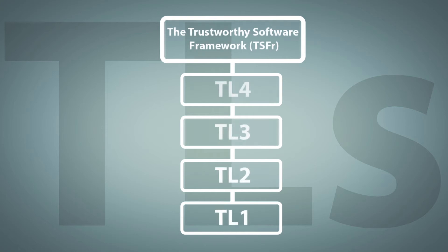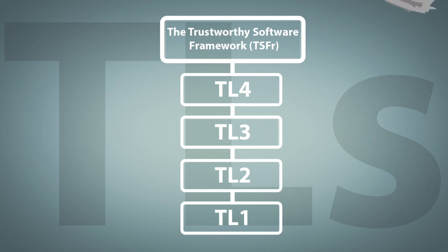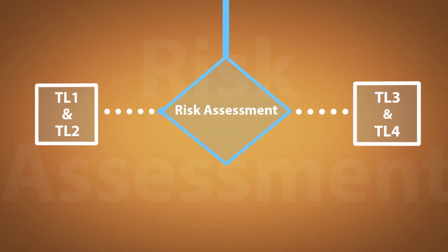The Trustworthy Software Framework has four assignable trustworthiness levels, or TLs. TL1 is the lowest and TL4 is the highest. The software used in critical applications such as fighter jets needs to be TL3 or TL4, but the software most of us use in our daily lives only needs to be TL1 or TL2.